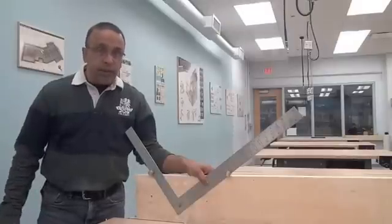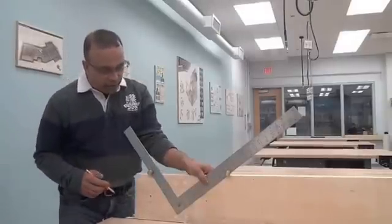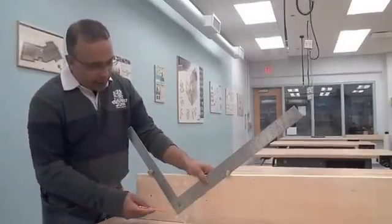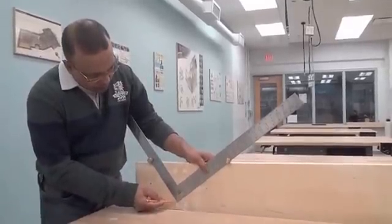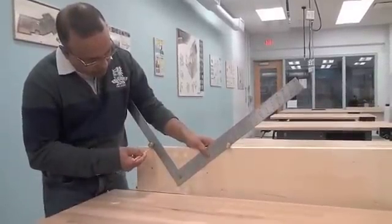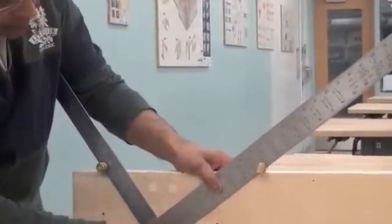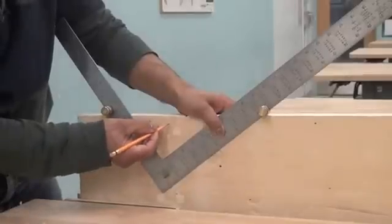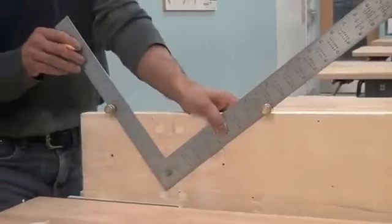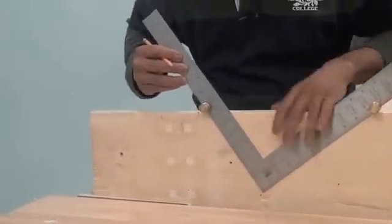So now that we have the stair buttons fixed to the framing square, we begin our layout at the top end of the 2 by 10 stair carriage. On the 7 and 3 eighths side, I draw a pencil line, and on the 10 and 1 eighths side, I draw a pencil line. Now before I move my square, I put the number 1, because that will be the first step.